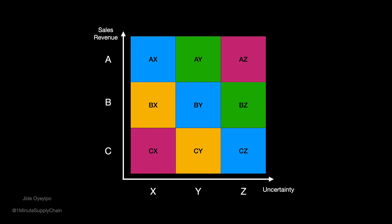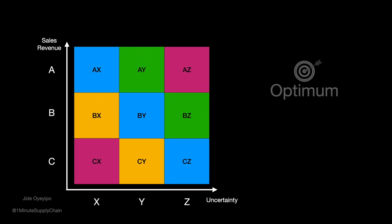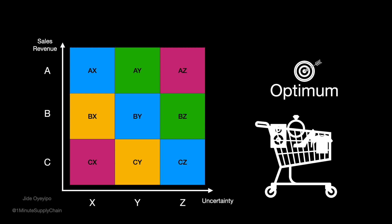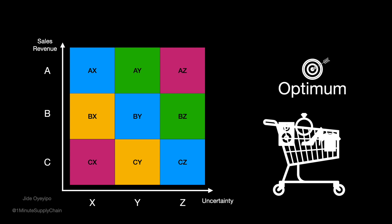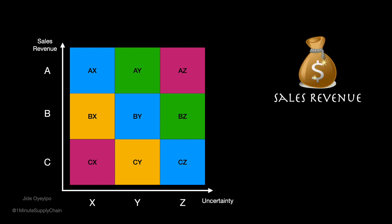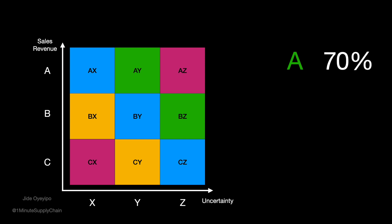This framework is used to determine the optimum planning method for different products. ABC categorizes your products by sales revenue. For example, monthly or weekly sales revenue. A can represent all products in the top 70% of sales revenue, B the next 25%, and C the bottom 5%.